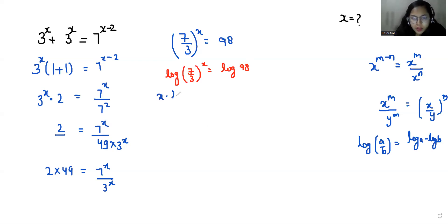So x times log 7 by 3 equals log 98. So x times log 7 minus log 3 equals log 98, and x times log 7 minus log 3.